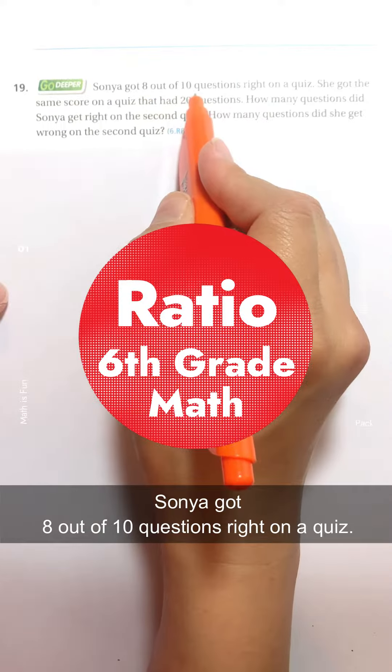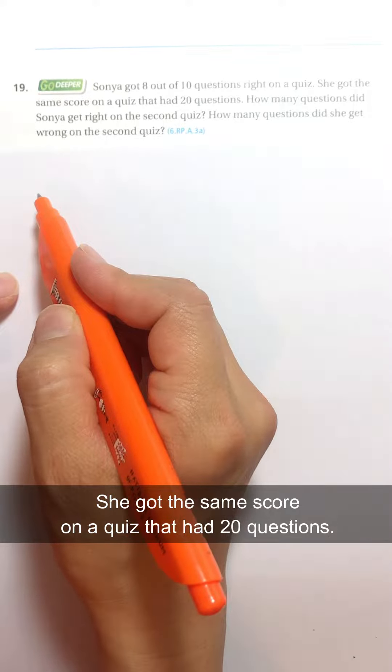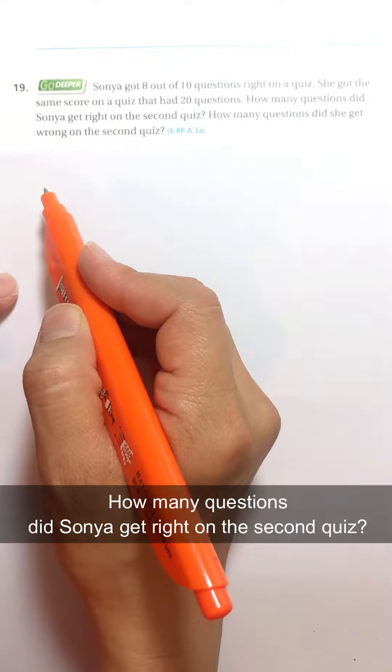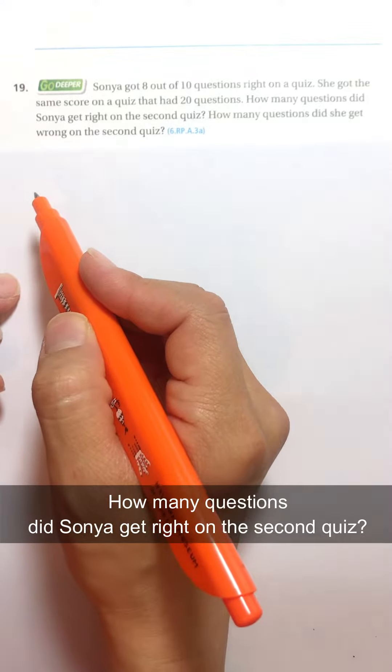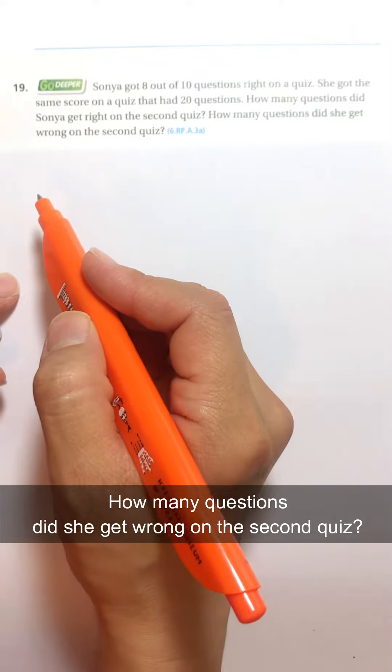Sonia got 8 out of 10 questions right on a quiz. She got the same score on a quiz that had 20 questions. How many questions did Sonia get right on the second quiz? How many questions did she get wrong on the second quiz?